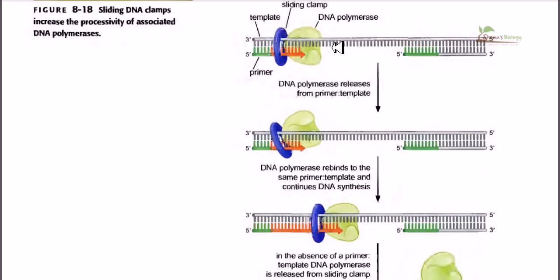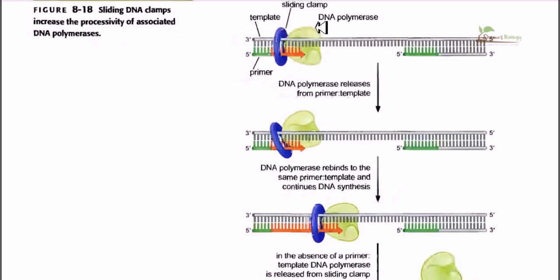It is obviously beneficial to have higher processivity of DNA polymerase because it means replication is occurring really fast within a particular time limit. Now we are going to talk about two proteins: one is the sliding clamp, also called the beta clamp, and another protein called the clamp loader protein, which as the name suggests loads the beta clamp onto the DNA polymerase.